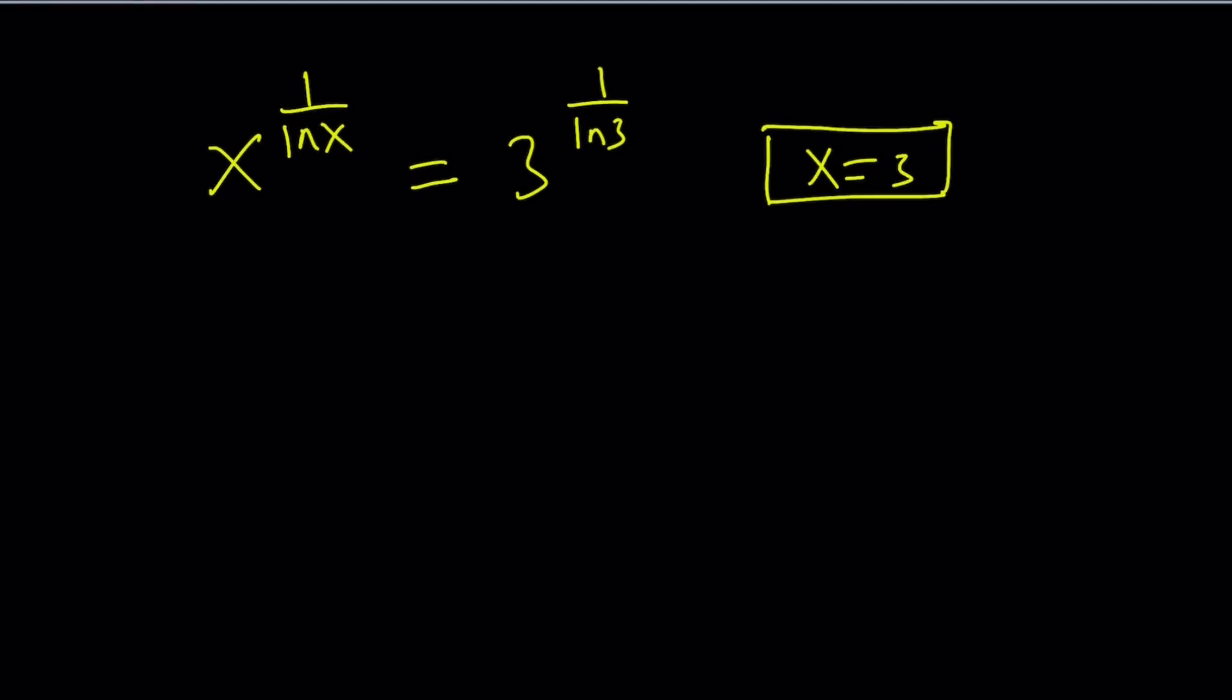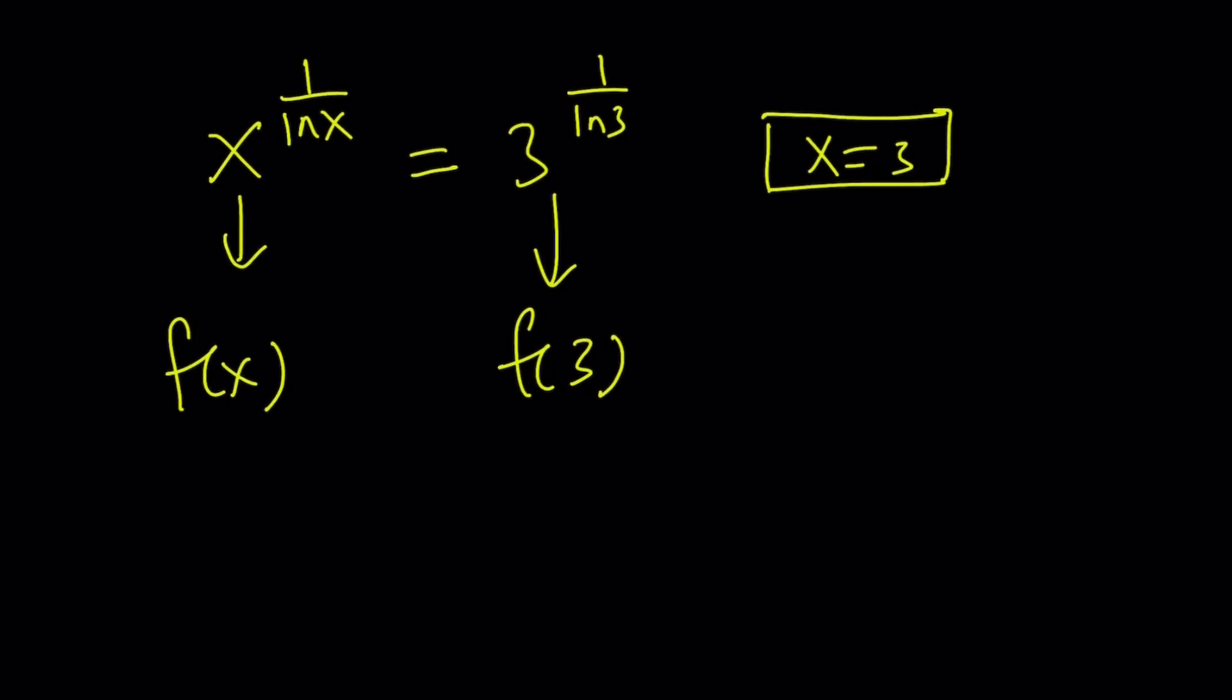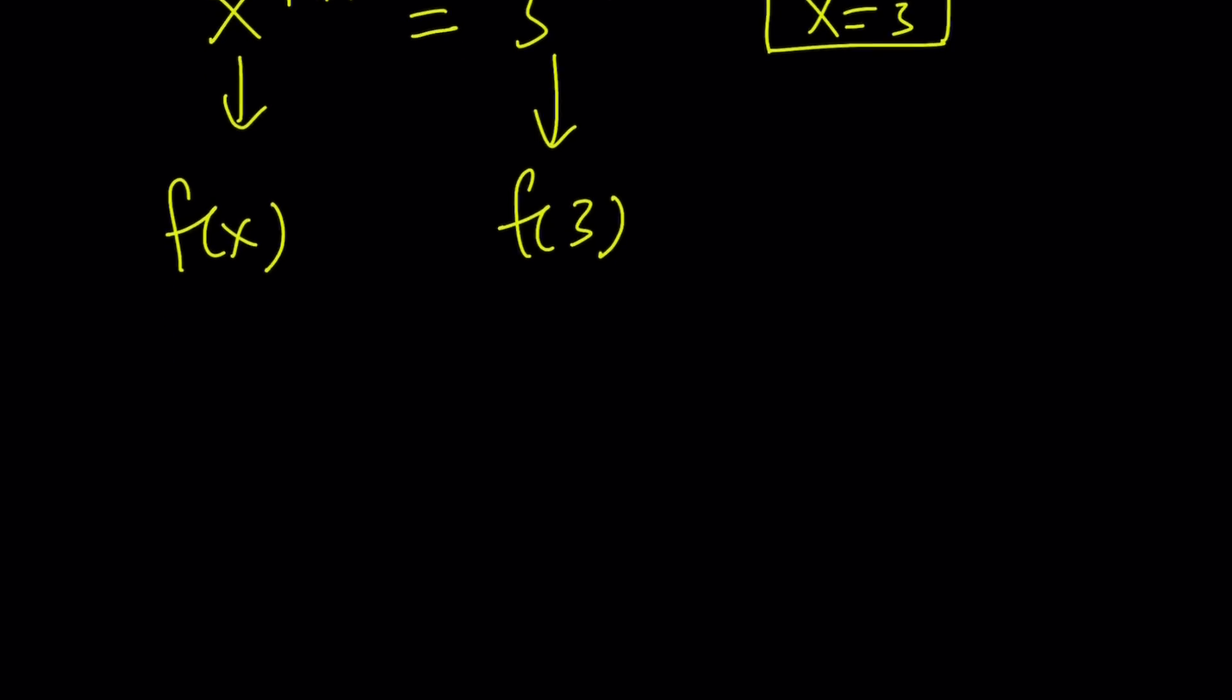So let's see how we can handle this. On the left-hand side, we have a function, and on the right-hand side is the same function where we evaluate the value of the function at x equals 3. So if this is f of x, then this would be f of 3. Now, can you always say if f of x is f of 3, then x is equal to 3? Well, it kind of depends on the function. Let's go ahead and take a look at this function. What kind of function are we dealing with?